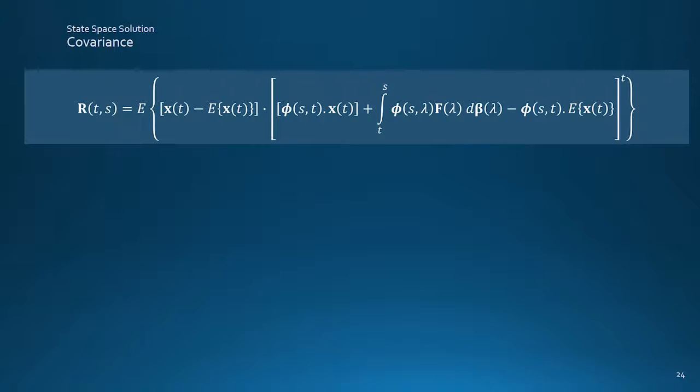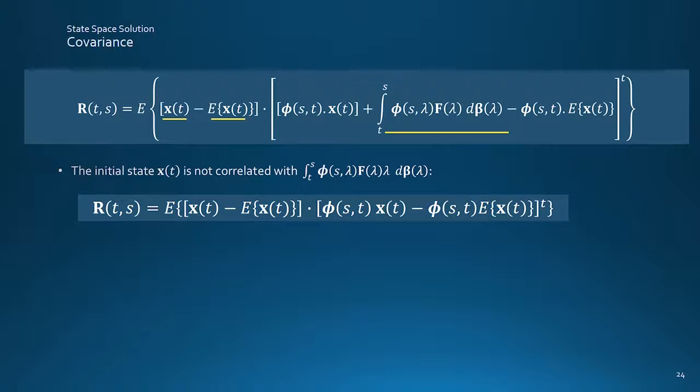It is possible to slim the thing down because of the expectation surrounding everything. Bits containing the system state, X at the initial time T, aren't correlated with the integral, which is concerned with how the system is driven from that initial state, but there is yet unknown noise input. So the integral term can be scrubbed from the square bracket to leave this.